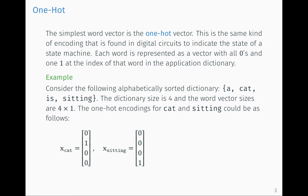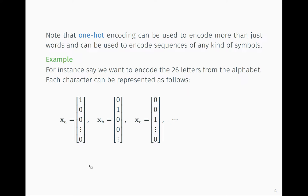It's just an index into your dictionary — nothing fancy. This works well especially if you're working with characters. If you have the 26 letters of the alphabet, you can encode them in a vector space of dimension 26. A lot of people doing text processing use one-hot encoding on characters, and that works fine.